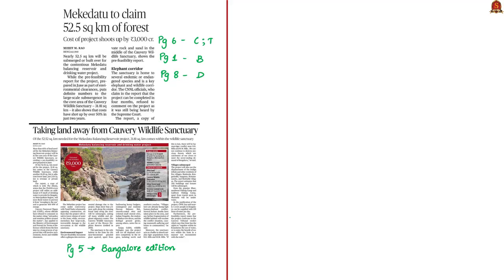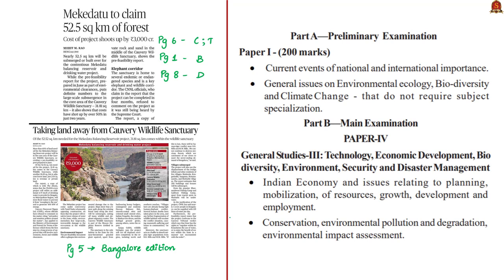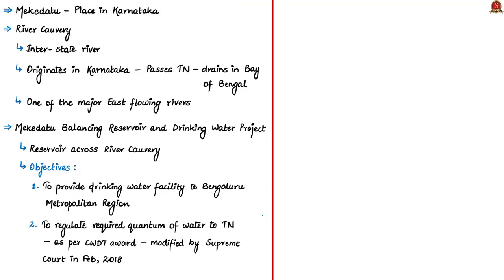Let us move on to the next news article about the concerns with respect to the Mekhedatu reservoir and drinking water project. The analysis will be relevant in prelims under current events, environmental ecology, and biodiversity, and in mains under General Studies Paper 3 for issues relating to development, conservation, environmental pollution, and environment impact assessment. Mekhedatu is a place in Karnataka along river Kaveri, which is an interstate river originating in Karnataka and draining into the Bay of Bengal after passing through Tamil Nadu — making it a major east-flowing river of approximately 740 kilometers in length.